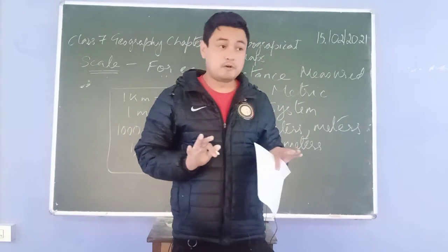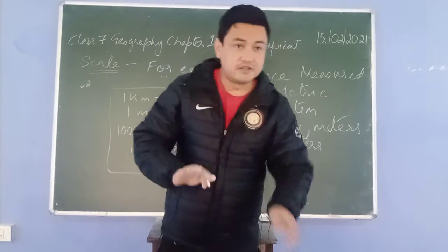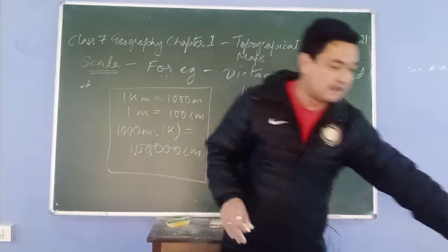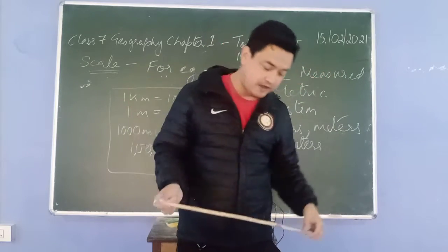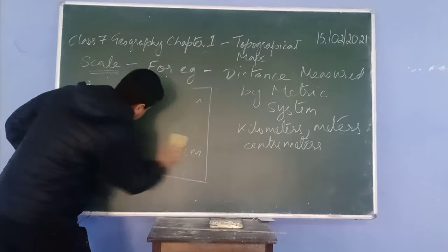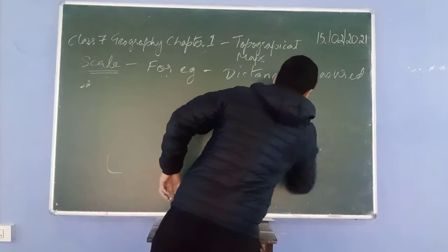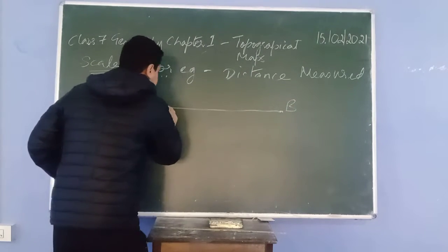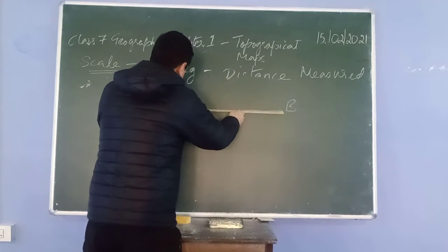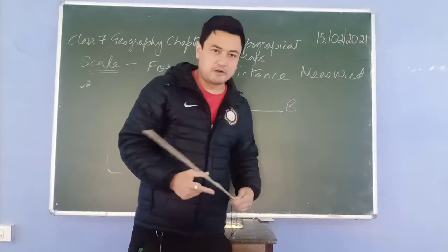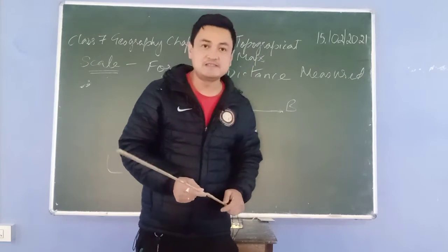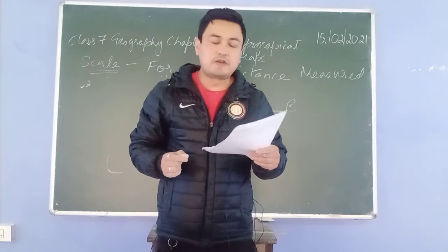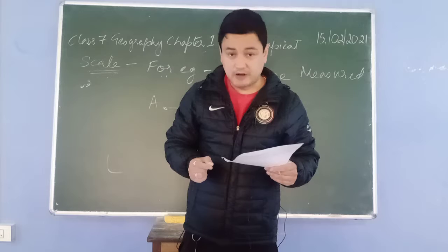The distance is always measured in a straight line. We can measure it with the help of a ruler. From point A to point B — point 1 to point 2 — you are going to measure it with the help of a ruler. In the ruler, the units of measurement are in the metric system, that is in centimeters.